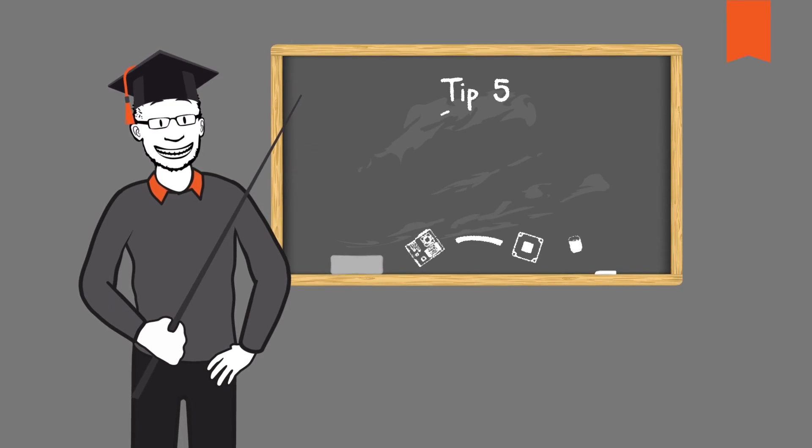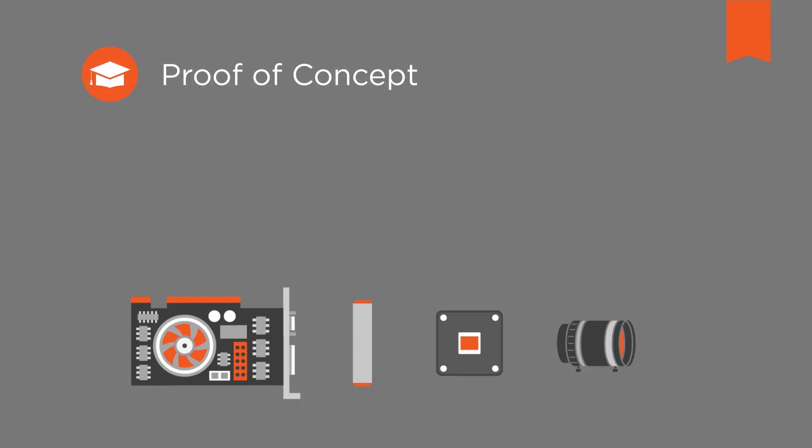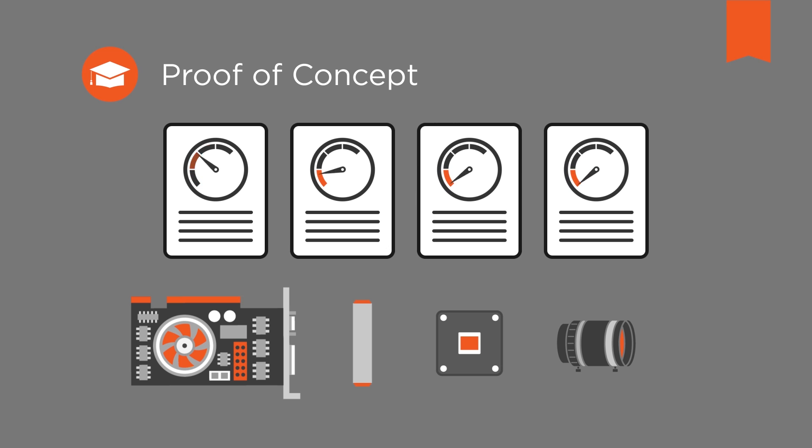Tip 5: Make a proof of concept. The performance of embedded vision systems is often overestimated. A development is purely made on the assumption of theoretical performance parameters. These are true for each component itself, but typically not when they work together.